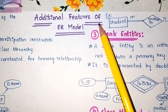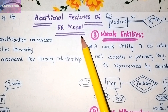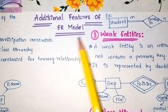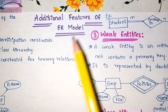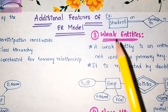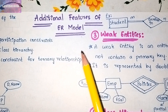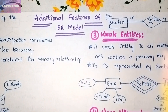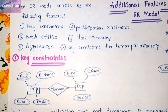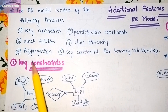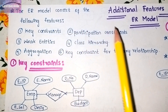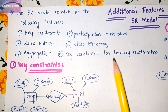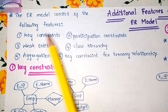In this session we are going to discuss the additional features of the ER model. We have already gone through many topics in DBMS. The ER model consists of the following additional features: key constraints, participation constraints, weak entities, class hierarchy, aggregation, and key constraints for ternary relationships.